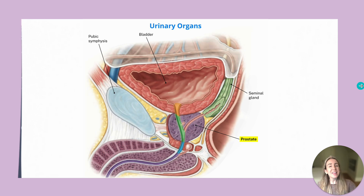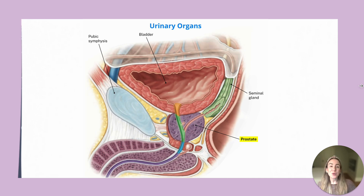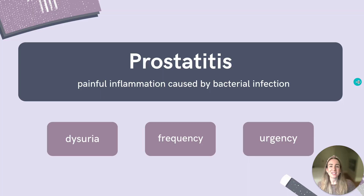So let's first go back to the basics and talk about what the prostate is. The prostate is part of the male reproductive system and it helps to make fluid for semen. It surrounds the urethra and is located right in front of the rectum. It is about the size of a walnut and there are several conditions that can affect the prostate.